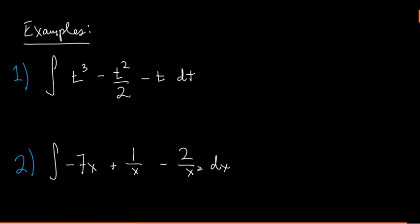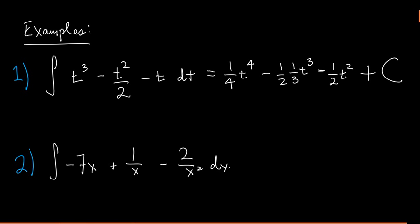Let's do the first example: the integral of t cubed minus t squared over 2 minus t dt. The first term gives 1 over 4 times t to the 4th. For the t squared over 2 term, we ignore the constant one-half and apply the power rule to get 1 over 3 times t cubed. For the last term, the power is 1, giving one-half t squared. Simplified: one-fourth t to the 4th minus one-sixth t cubed minus one-half t squared plus c.